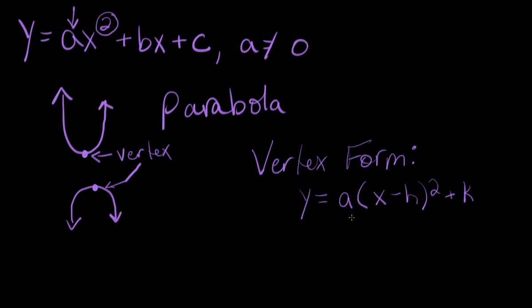The reason we call this particular form vertex form is because in this form, it's really simple to find the vertex of your graph. The vertex of your graph. The vertex of your graph in this form is always h comma k.